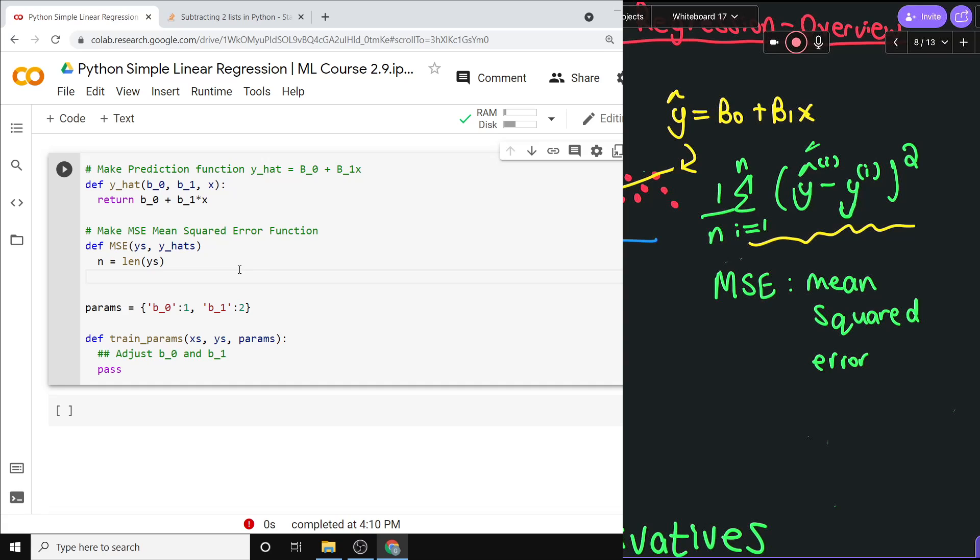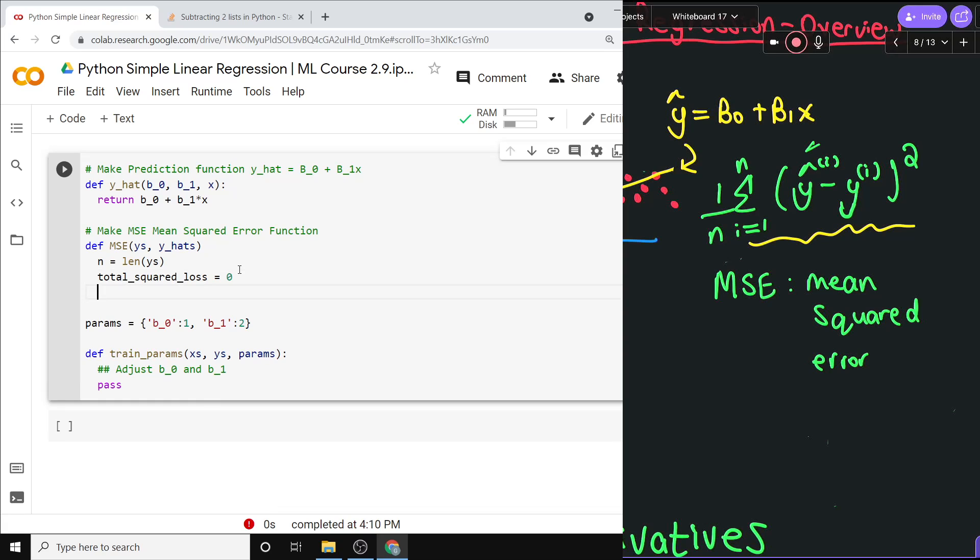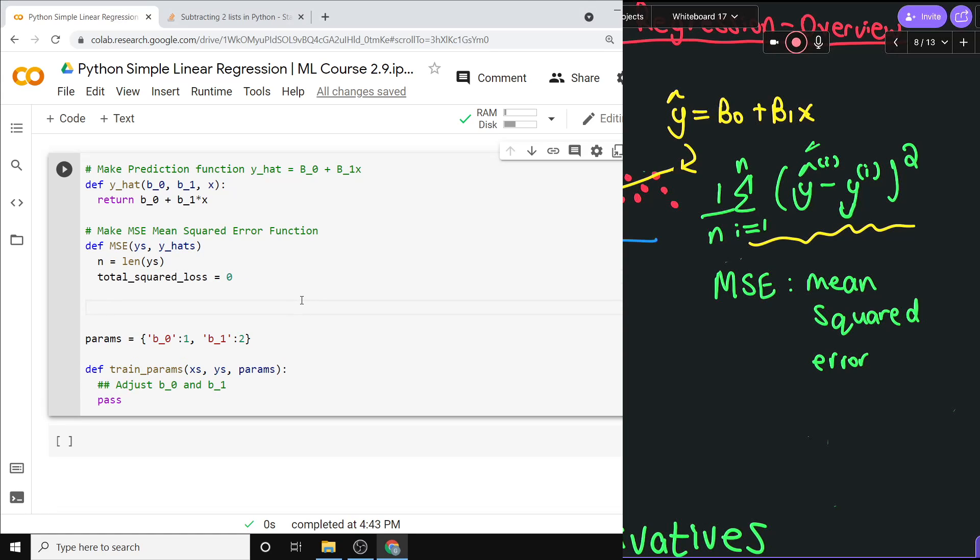Now, we need to, one at a time, sum over the difference between them and squared. So I'm going to say total squared loss. Total squared loss is going to be 0 for now. And then what we'll do is just one at a time, go through a y, an actual y, add a prediction, subtract them, square that value, and add it to the total.